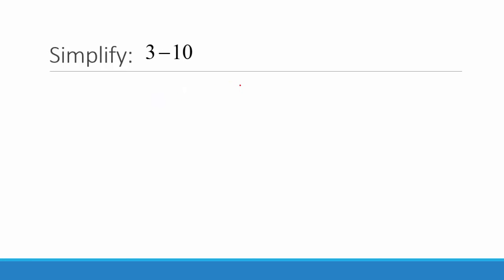3 minus 10. We will start by changing subtraction to addition: 3 plus negative 10. The signs are different so we will subtract the numbers. 10 minus 3 is 7, then we will keep the sign of the larger number. The larger number is 10 and 10 is negative so our answer is negative 7. You can think of this as money: you have a bank account with $3 in it, then you wrote a check for $10 — now your bank account reads you owe $7.